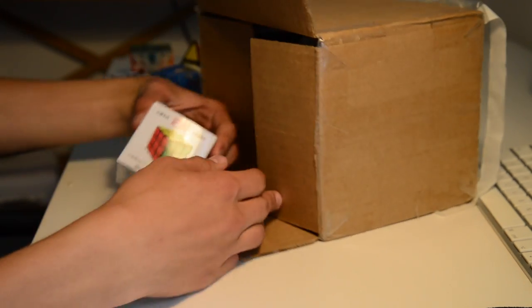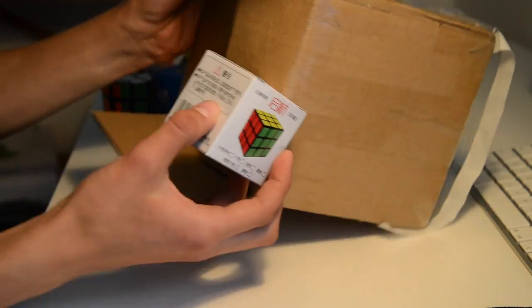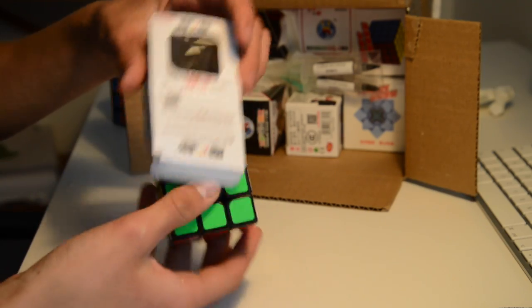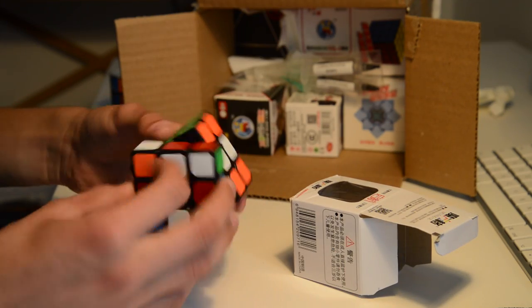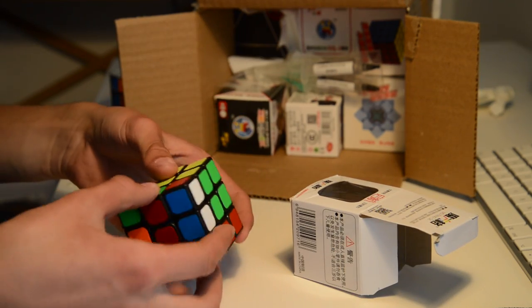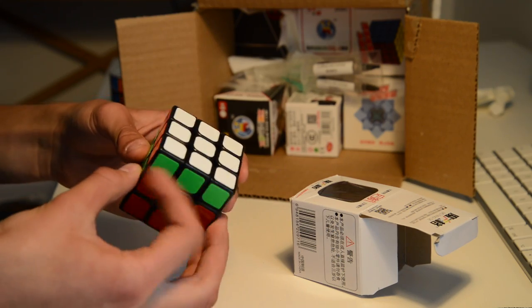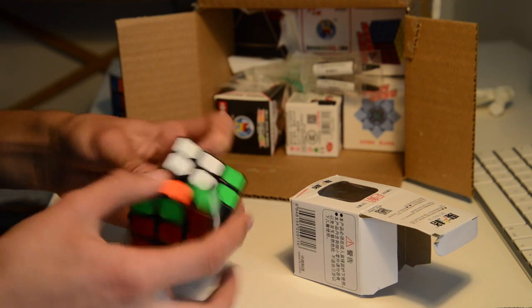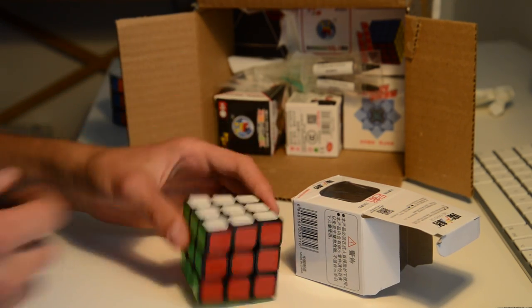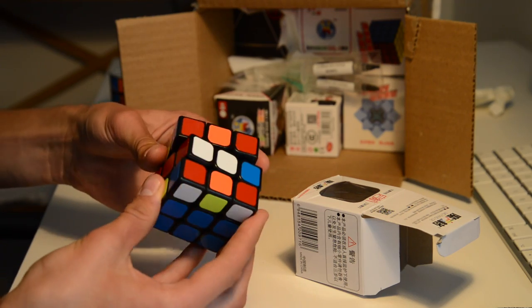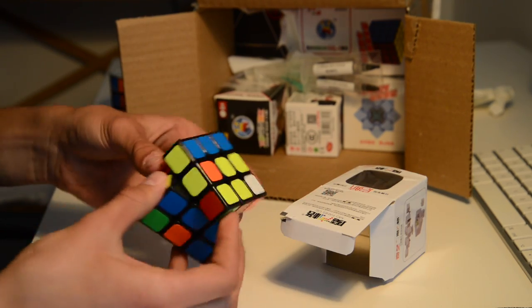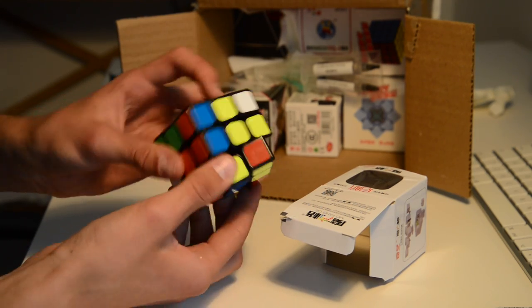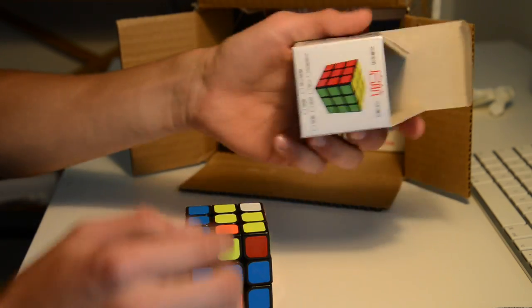We're going to start with the most unexciting cubes. The first 3x3, this is not the best. Oh my god, it turns actually really good. It has a feeling that it's going to pop and it's really lube. It is a fantastic cube. So this is the 3x3 Mofang G.